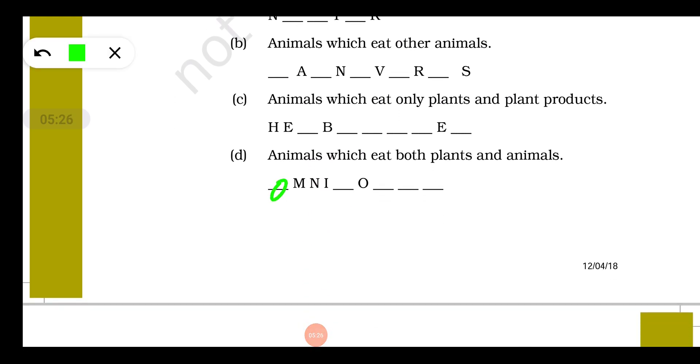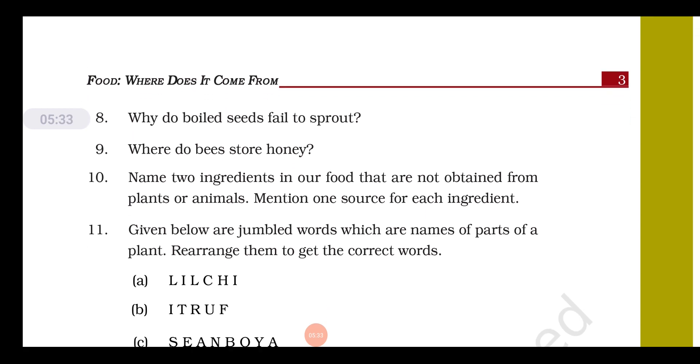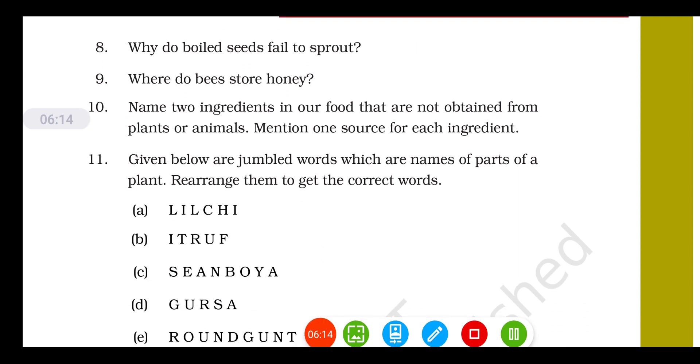Question number eight: why do boiled seeds fail to sprout? What happens when we boil seed is that its biological components get decomposed, so it is not able to sprout. Question number nine: where do bees store honey? Honey bees store honey in the beehive. Beehive has hexagonal shape. If you have not seen it live, you can check on YouTube videos for pictures of honeycomb. In these hexagonal cells, honey is stored by honey bees.